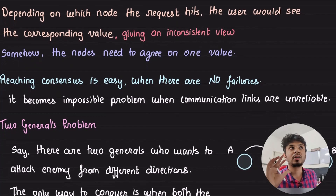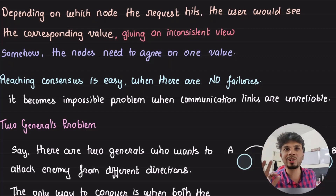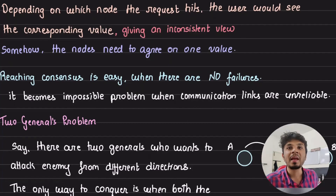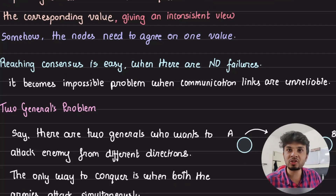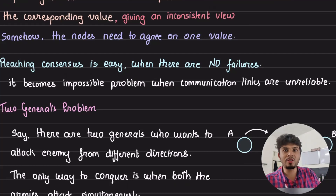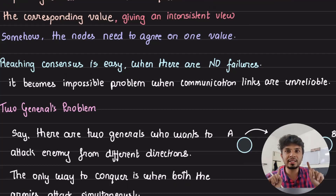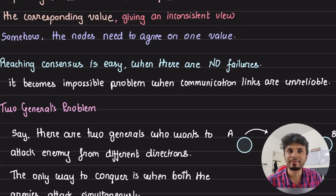Reaching a consensus is extremely simple when there are no failures — that's the easiest system to build. But it becomes impossible — and I'm using a really strong word — impossible to solve distributed consensus if the communication links are unreliable. We'll talk about it through an analogy.